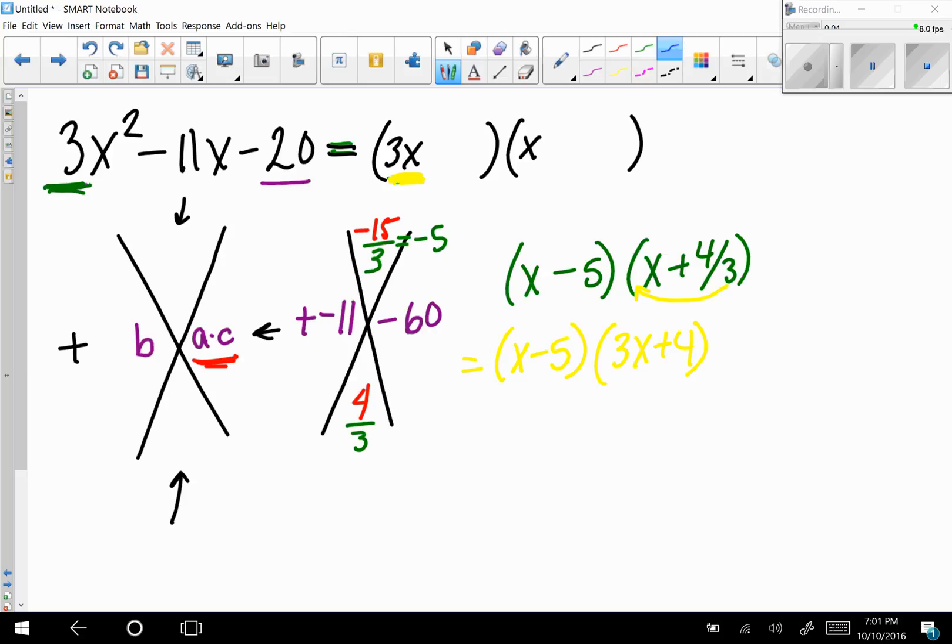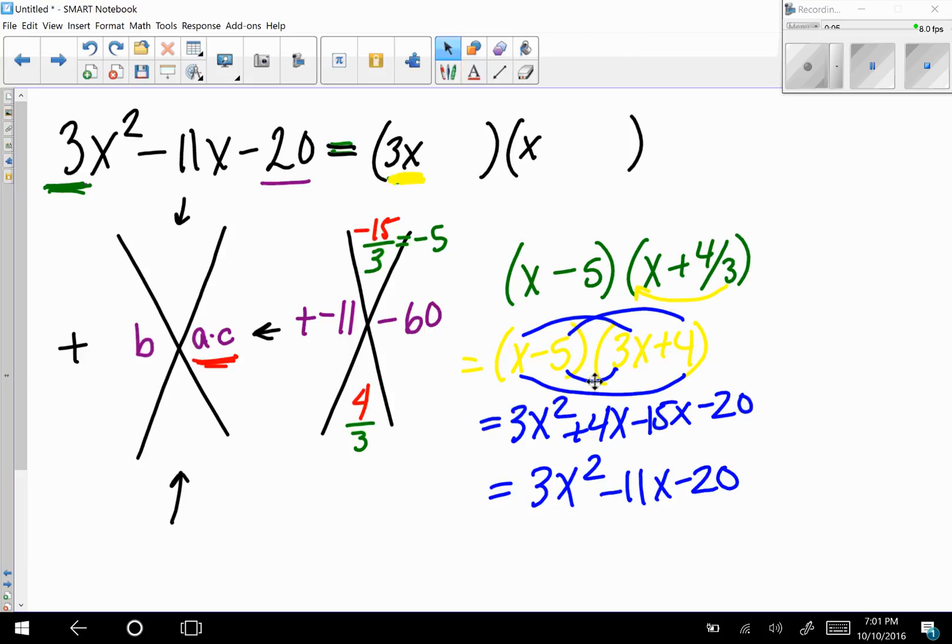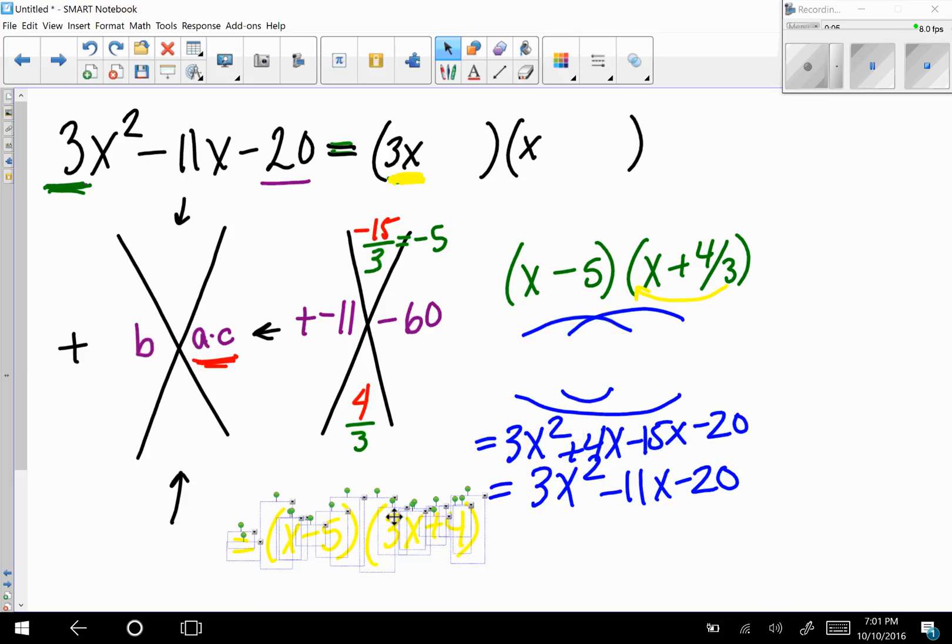And of course, I'm sorry if you can't see the yellow. That's a bad choice. And let's FOIL that out to check that. So the first would be 3x squared. Outside is plus 4x. Inside is minus 15x. And last is minus 20. So it indeed does work. It's 3x squared minus 11x minus 20. So just to review those steps, my one here in yellow is my final answer.